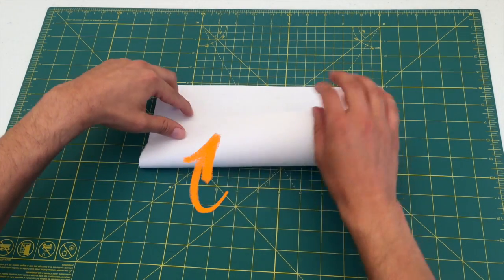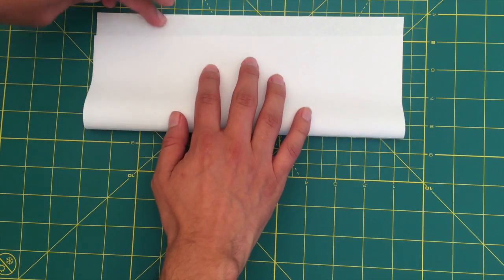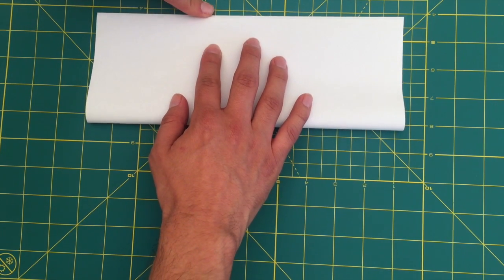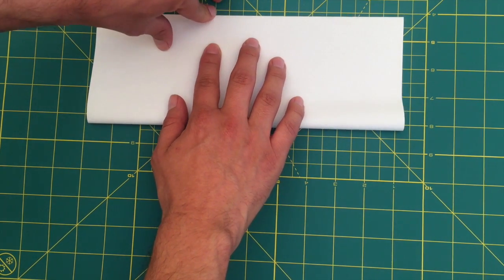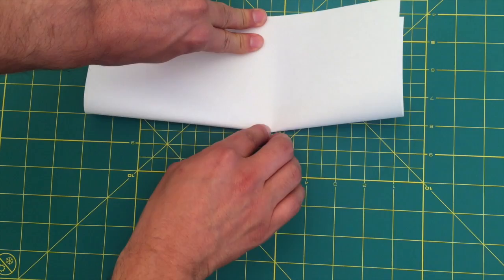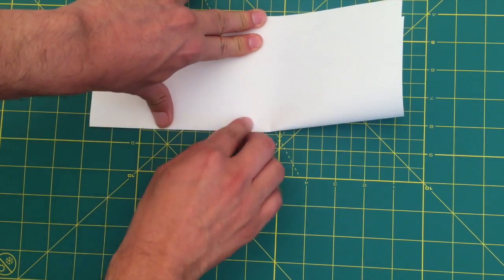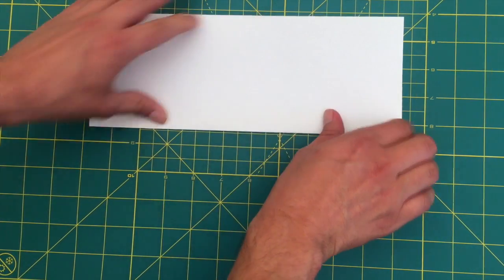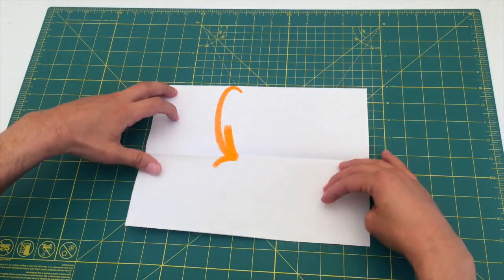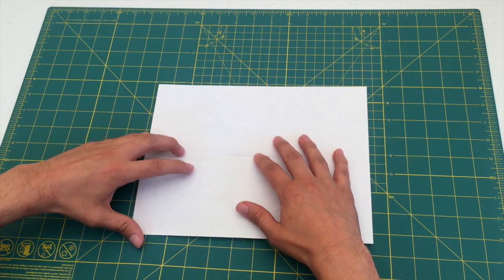Alrighty everybody, we're going to start by folding the piece of paper in half like so. Make sure that the edge at the top is as close as you can get it. Once that's complete, make sure you crease. Use your nail if you have to. Unfold the paper, and you should have a nice crease down the center of your model.